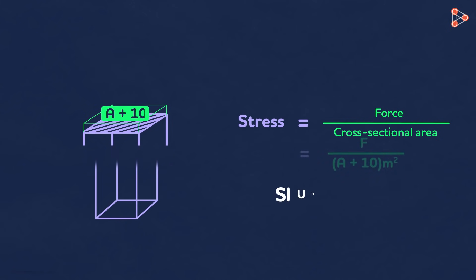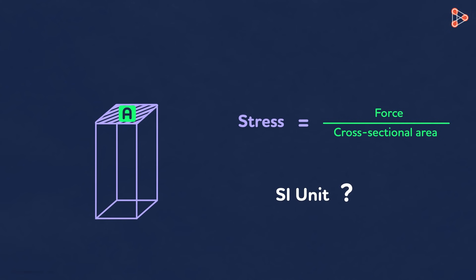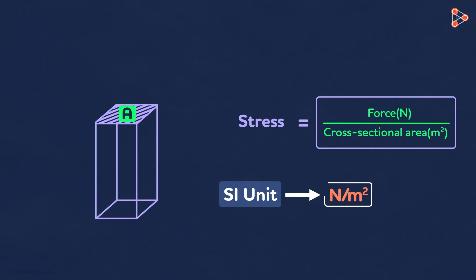Now what is the SI unit of stress? Stress is force per unit area. The SI unit of force is Newton denoted by N, and that of area is meter squared. So the SI unit of stress is Newton per meter squared.